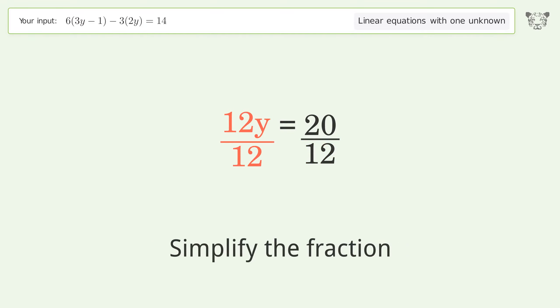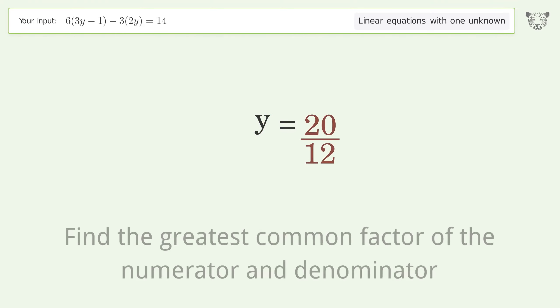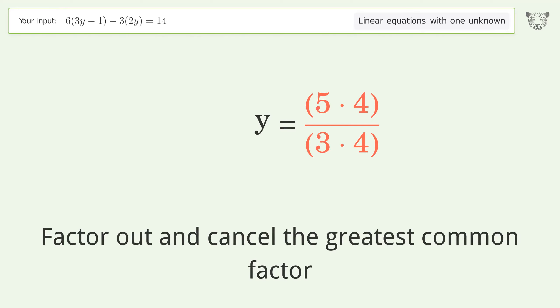Simplify the fraction. Find the greatest common factor of the numerator and denominator. Factor out and cancel the greatest common factor.